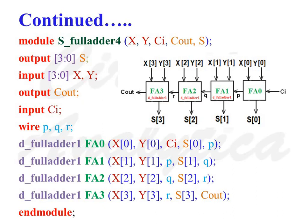Second line defines s as a 4-bit output. Third line defines x and y as 4-bit input ports. And the next line defines c_out as an output port.